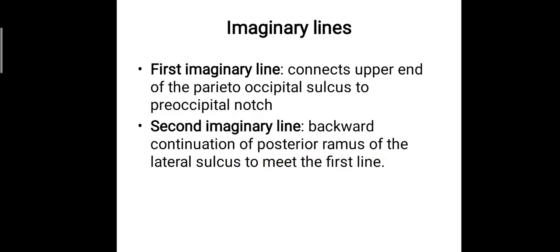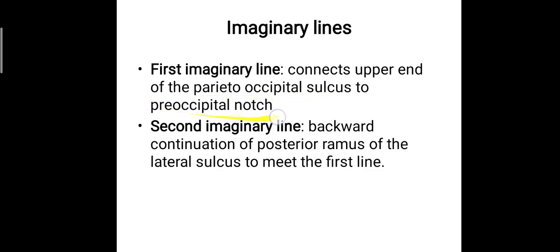There are two imaginary lines which can be drawn to separate the other two lobes. The first imaginary line connects the upper end of the parieto-occipital sulcus to the pre-occipital notch. The second imaginary line is the backward continuation of the posterior ramus of the lateral sulcus to meet the first line.